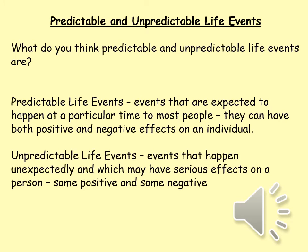In this unit we'll also look at predictable and unpredictable life events. Predictable events include starting school, going to secondary school, having a job, going to university, getting married, and having babies. Unpredictable life events, however, are things such as accidents, divorce, redundancy, and other unexpected things which occur to us. We'll be looking at the impact that both predictable and unpredictable life events can have on our health and well-being.